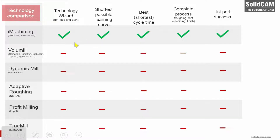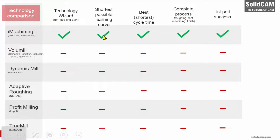We are the only technology that has a technology wizard. We are able to do this because iMachining guarantees constant cutting force on the tool. We have the shortest possible learning curve because the technology wizard takes all the decisions, so the user controls very few things — simply the level. We have eight levels and the user can choose one. In all our benchmarks against competitors, we have the best and shortest cycle time. With iMachining 2D we support not only roughing but also rest roughing and finishing, and we always guarantee first part success.